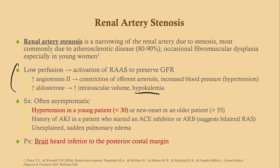Often this is asymptomatic; however, when it does show up it's often hypertension in a young person or new onset hypertension in an older person. If you have a history of acute kidney injury in a patient who recently started an ACE inhibitor, that suggests bilateral renal artery stenosis — the kidney relies on a robust renin-angiotensin-aldosterone system to maintain GFR. If you take that away, GFR will plummet. On physical exam you may hear a bruit.